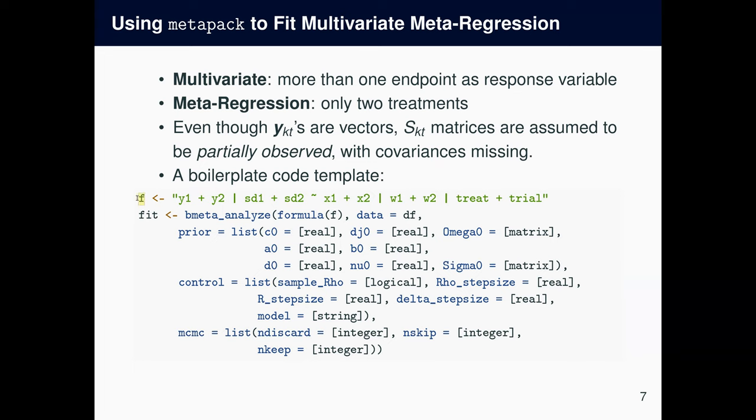So once the formula is set up, that formula is passed to bmetanalyze as the first argument. Because we saved F as a string, we have to convert it to a formula by passing it to the formula function. And bmetanalyze has three other important arguments: prior, control, and MCMC. They're pretty self-explanatory. Prior is a list of hyperparameters. Control pertains to the tuning parameters of the MCMC algorithm, and there is additionally this model parameter, which I'll be explaining soon. MCMC is how many burn-in iterations and how many thinning iterations and how many posterior samples at the end.